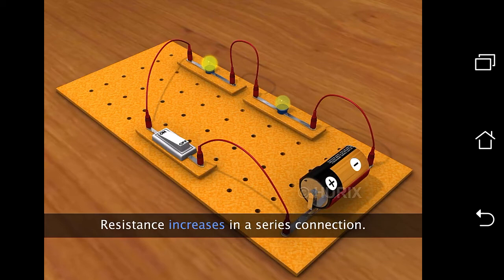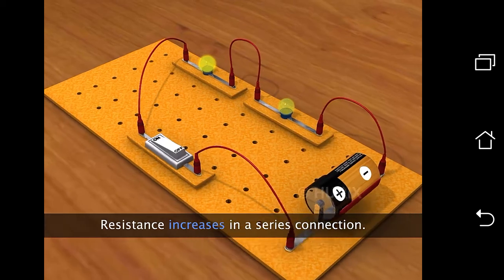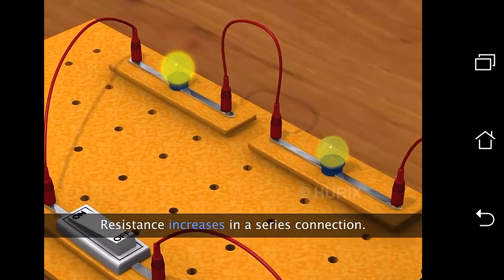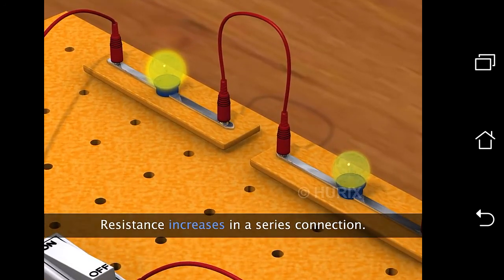When two or more bulbs are connected in series, resistance increases and the flow of the current decreases. This makes the bulbs glow dimmer.